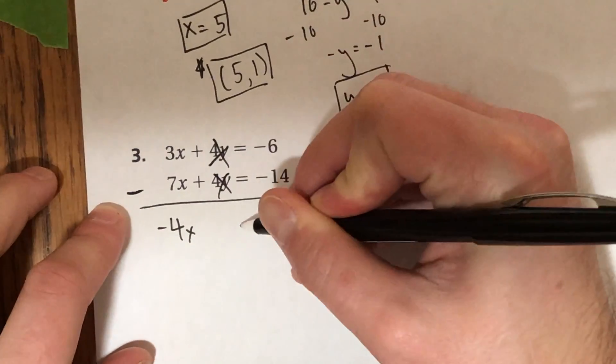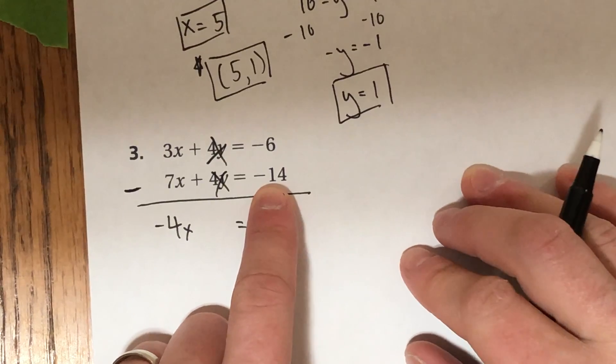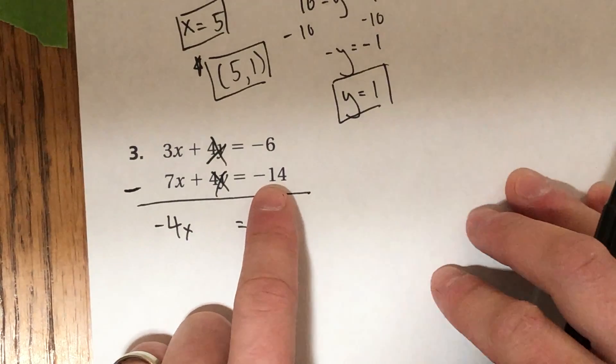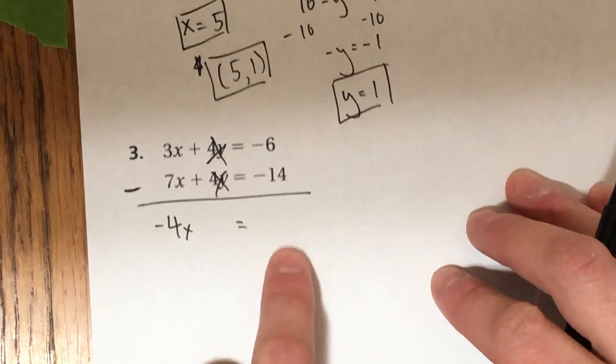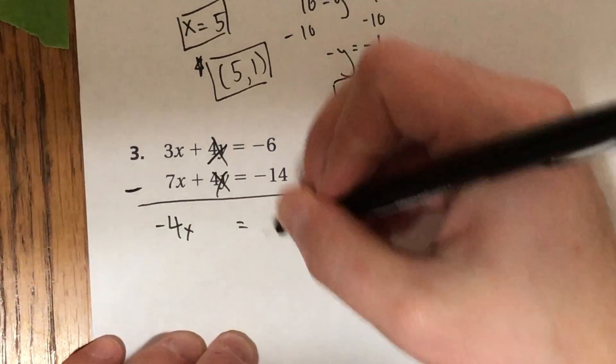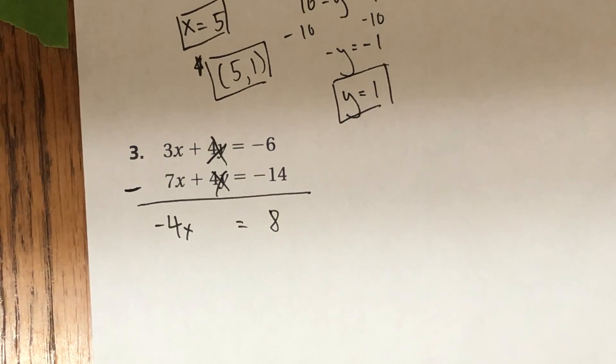Negative 6 minus negative 14. That's a lot of negatives. Negative 6. If you subtract a negative, you're really adding. Negative 6 plus 14 is positive 8. So there's some help to get you started on number 3.